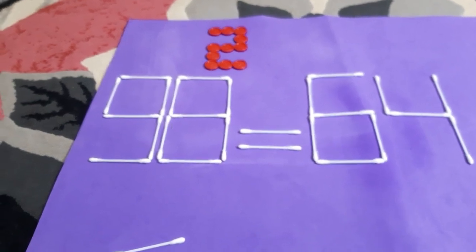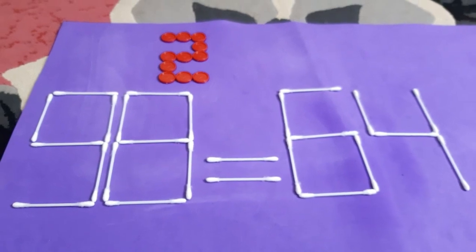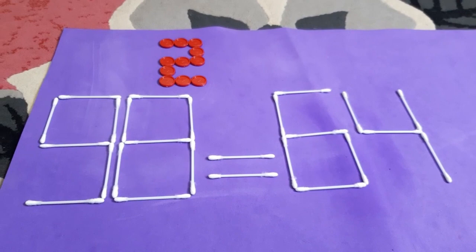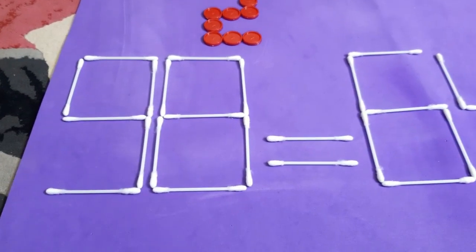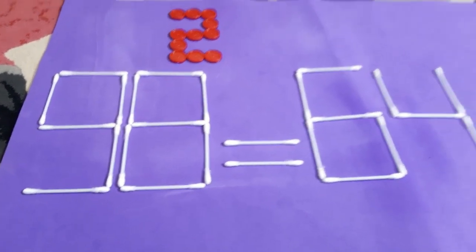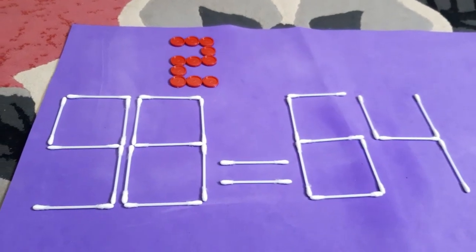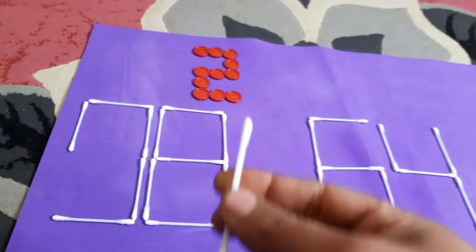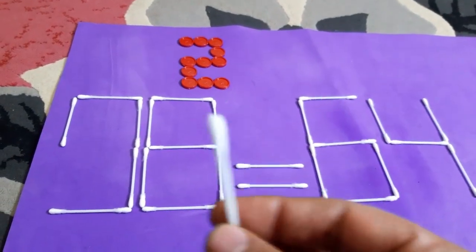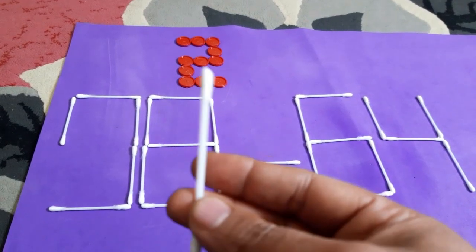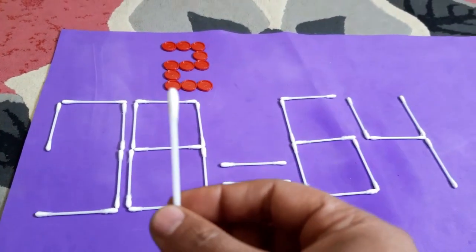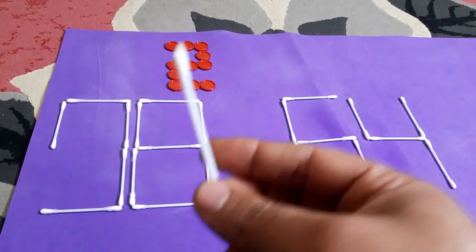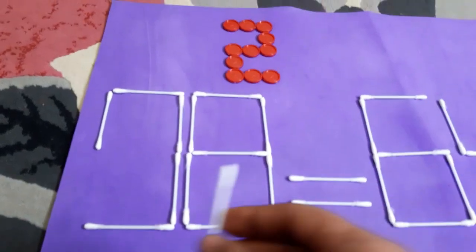Time's out. Which stick will you move in order to make 9 squared equal 64? Can you find this stick? It's this stick — pick this stick out and ask yourself where you will put it. You must put it at the proper position. Where is the proper position for this stick? It's here.